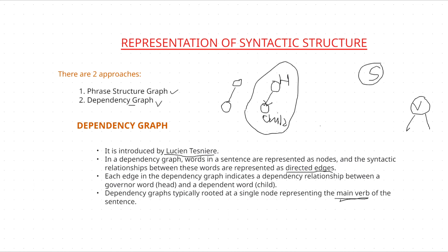So there are three differences between these two things. In phrase structure graph, nodes are represented as phrases, but in dependency graph nodes are represented by words. Second, phrase structure graph uses undirected edges while dependency graph uses directed edges. Third, in phrase structure graph 'S' (sentence) is taken as the root node, whereas in dependency graph the main verb is taken as the root node. Now let's understand this with an example.